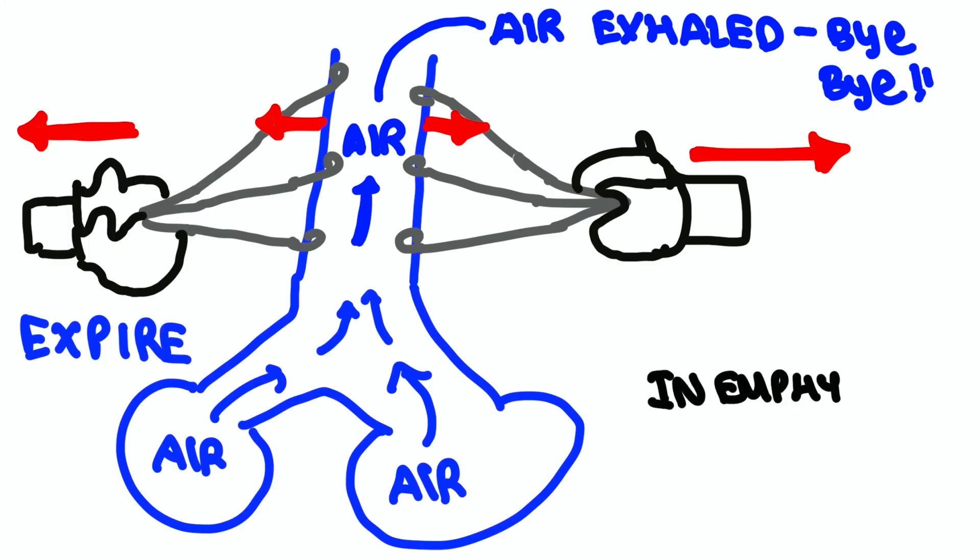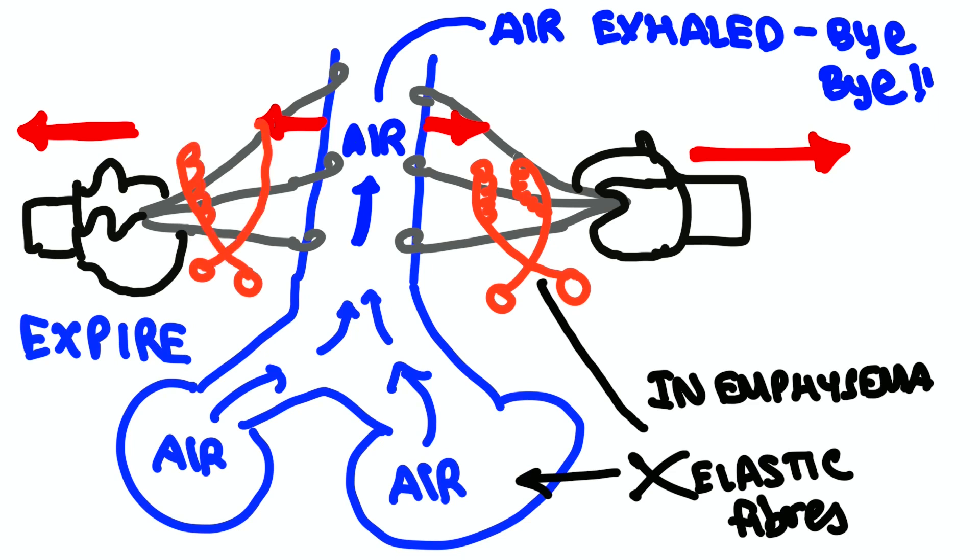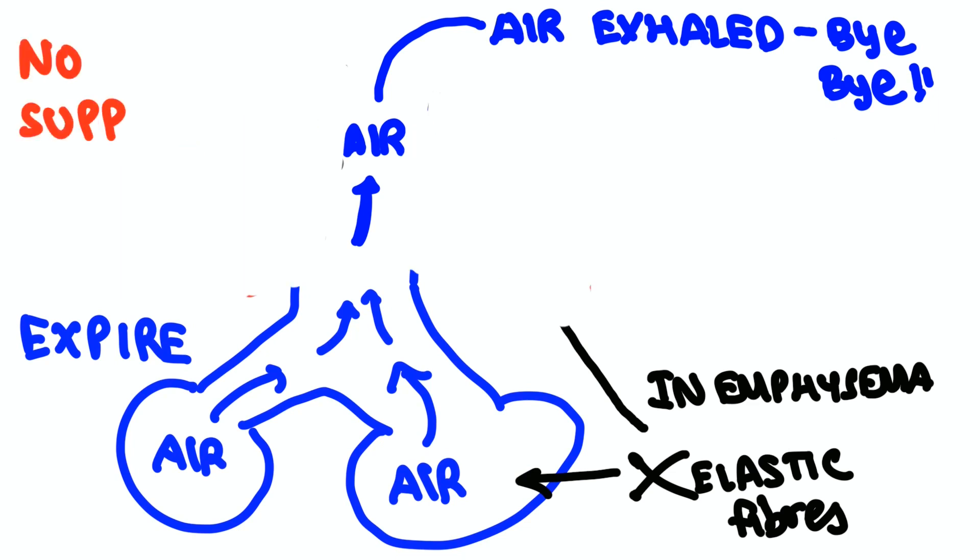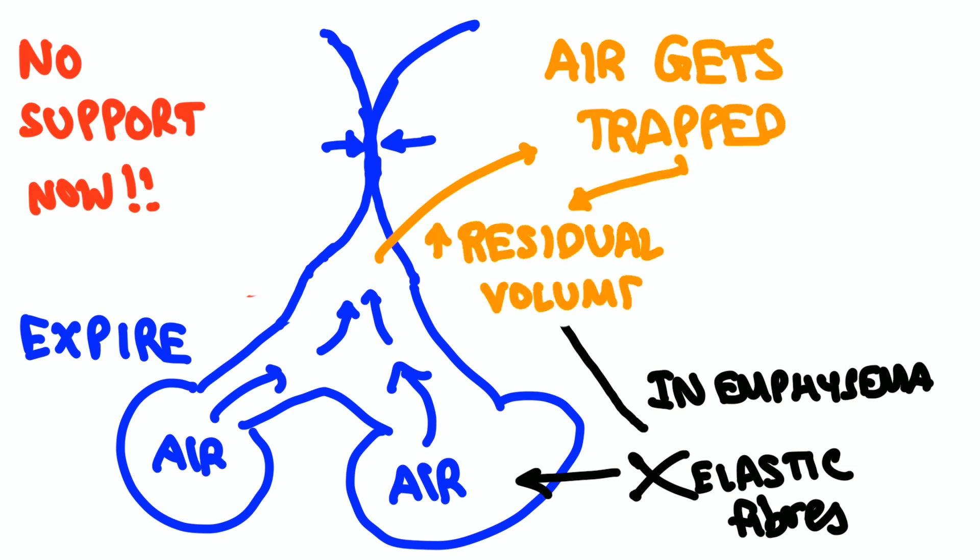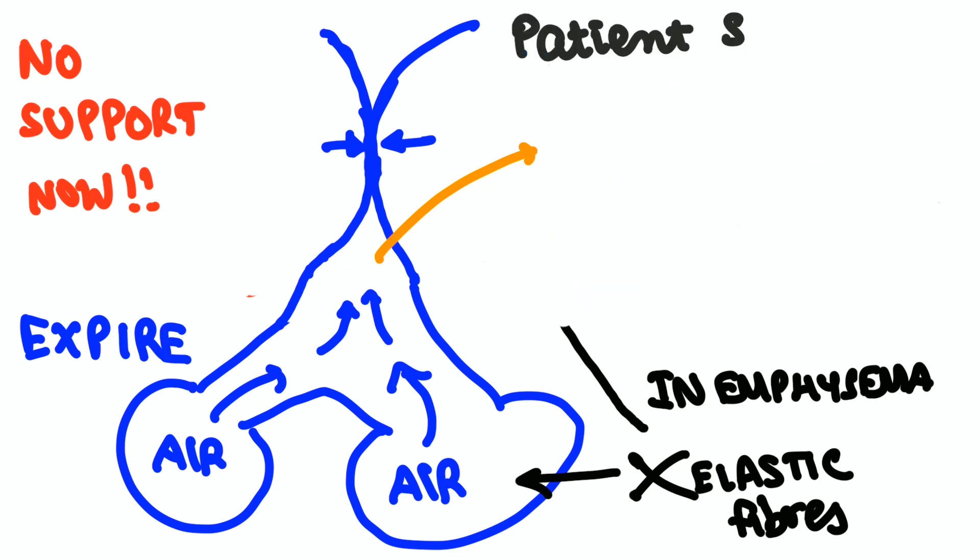In emphysema, there is not only destruction of elastic fibers on the alveoli but also the elastic fibers supporting the bronchial lumen. With no support now, bronchi collapse during expiration, then air gets trapped leading to elevated residual volume. It can form bullae as well, and the bullae can rupture leading to pneumothorax in COPD patients.